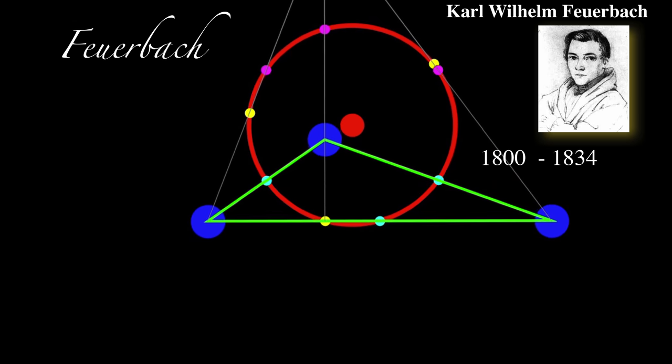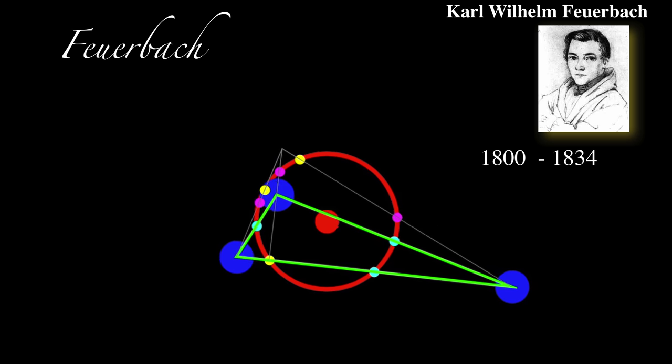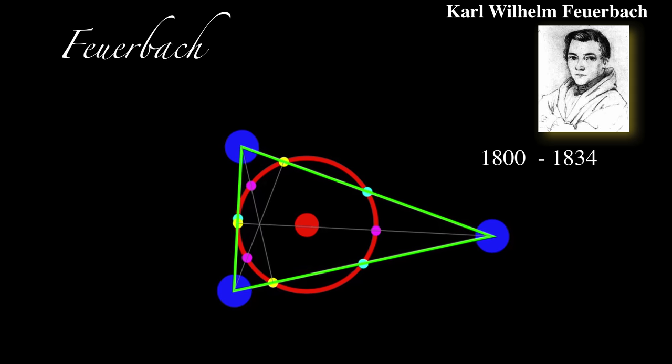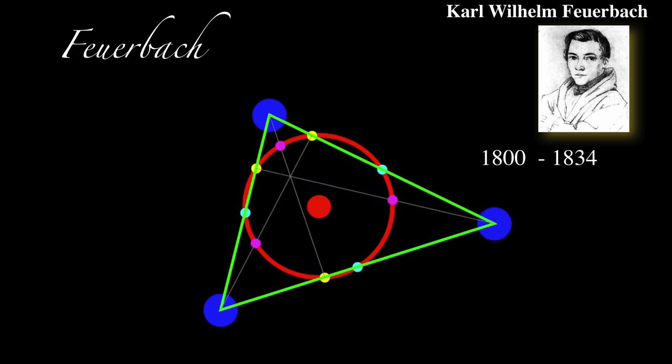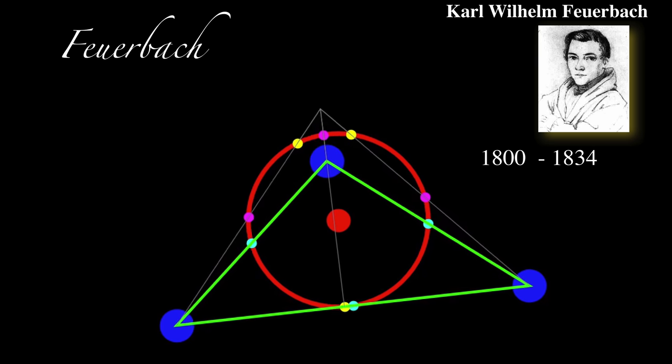And here is the Feuerbach nine-point circle. We have the pedal points of the altitudes, the side bisectors, as well as the midpoints between altitude meeting point and the vertices. They all lie on a circle called the Feuerbach circle or nine-point circle.